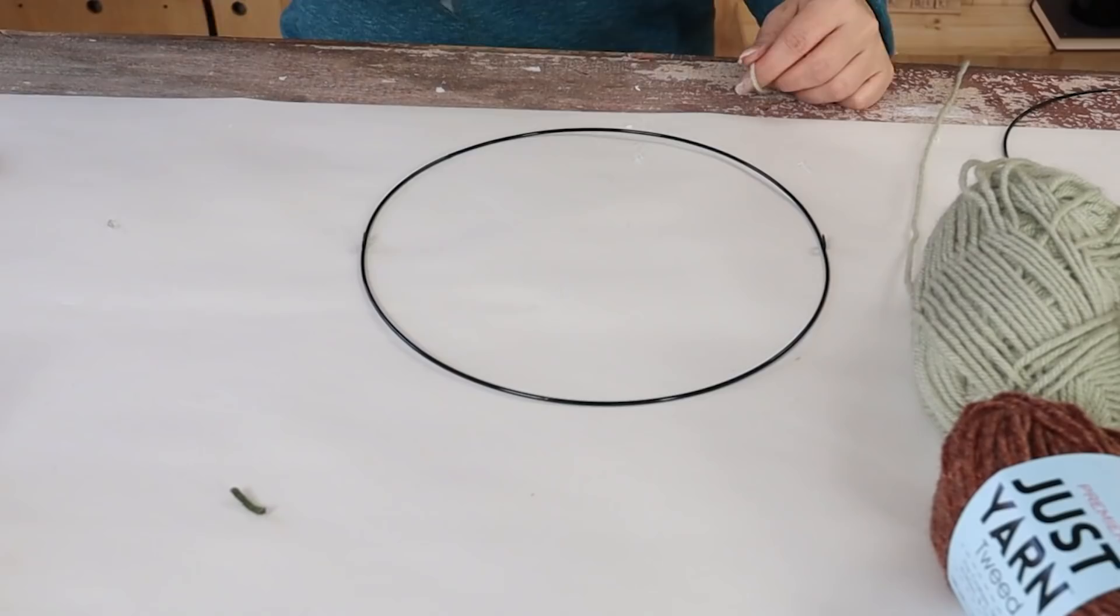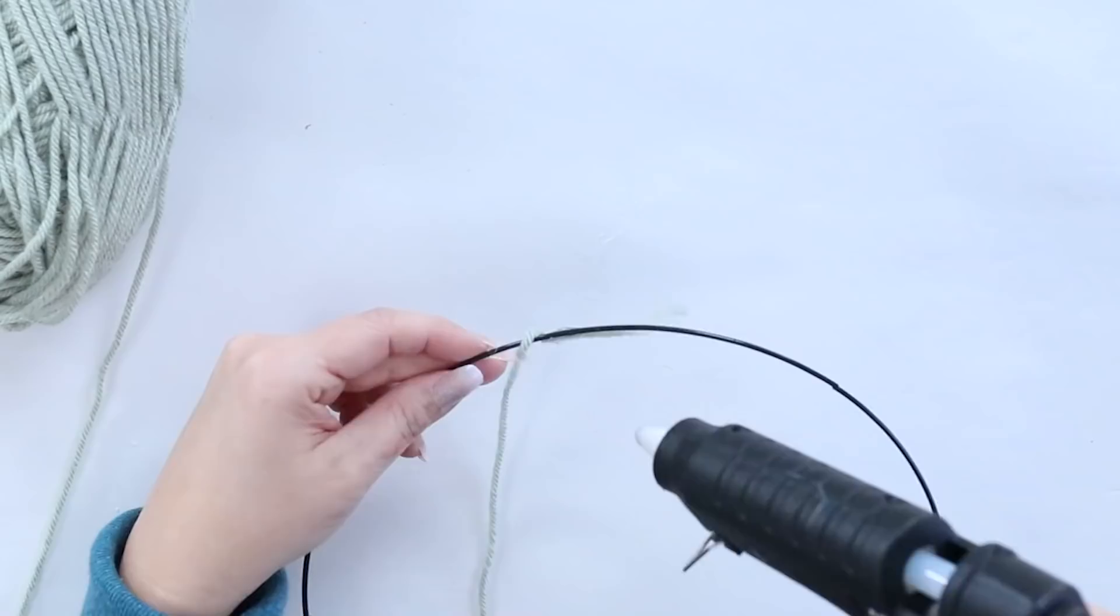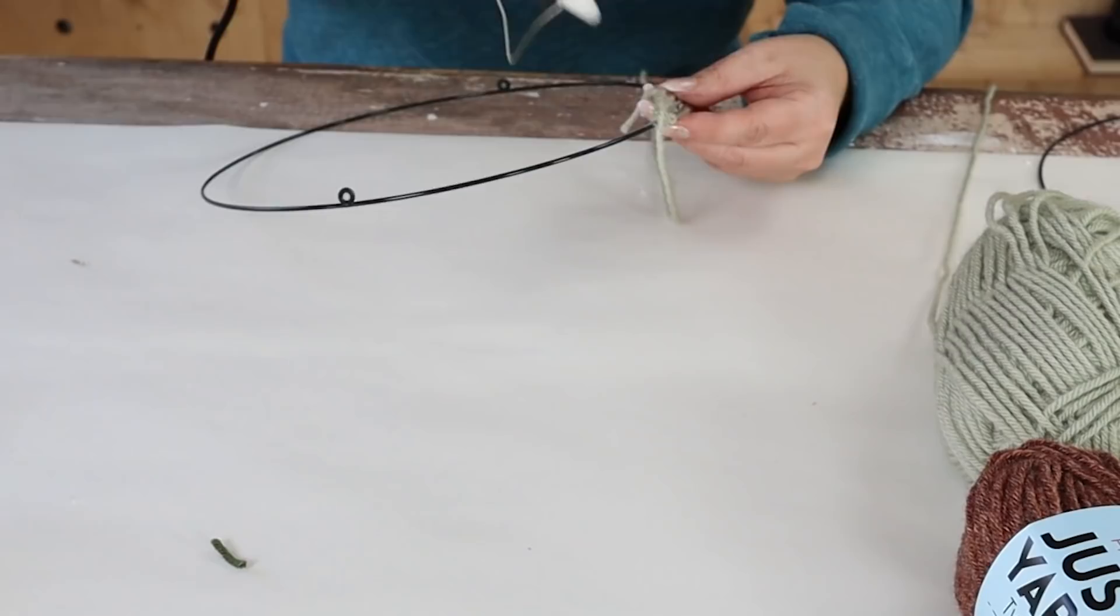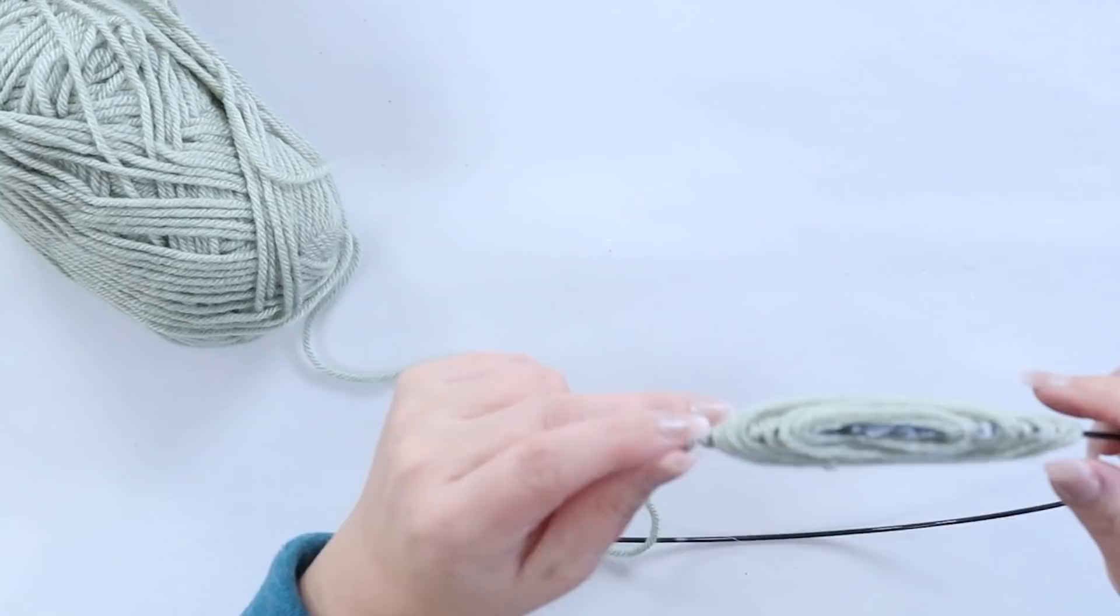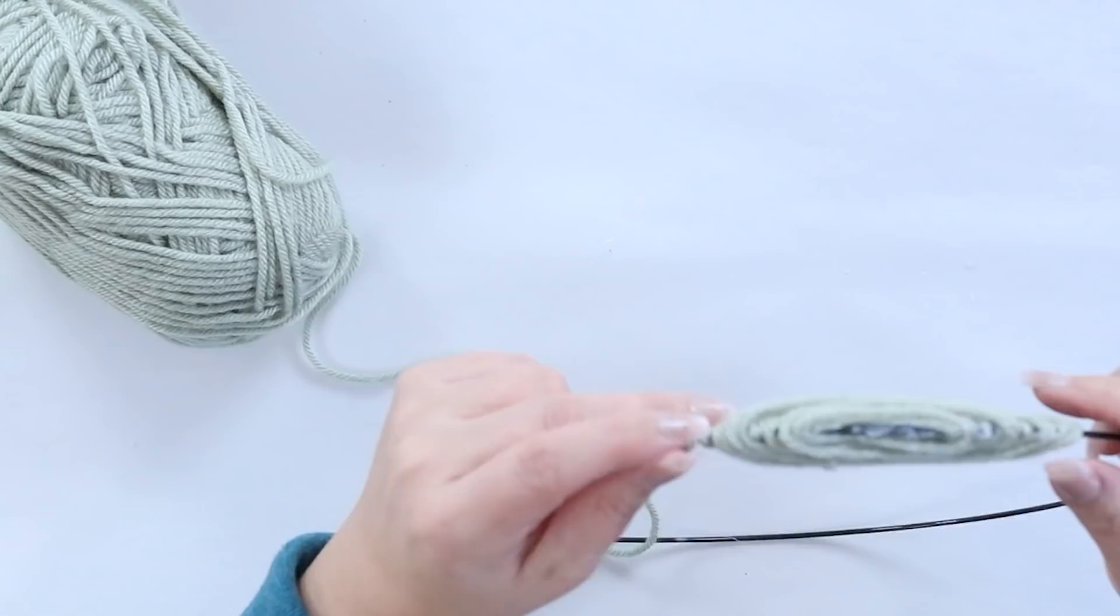Now that kind of took a while to do, so I decided with my next one, I wanted to start on the outside and see if that was an easier process. So I actually started by hot gluing to the outer edge and then continuing to hot glue until I got to the center. I wanted to let you guys know that it's actually easier to do it that way, to start on the outside and then add the yarn to the middle. So that's how I did the other two.